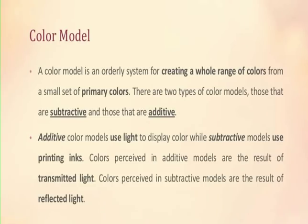A color model is an orderly system for creating a whole range of color from a small set of primary colors. There are two types of color models: those that are subtractive and those that are additive. Additive color models use light to display color, while subtractive models use printing inks. Colors perceived in the additive models are the result of transmitted light, and colors perceived in the subtractive models are the result of reflected light.